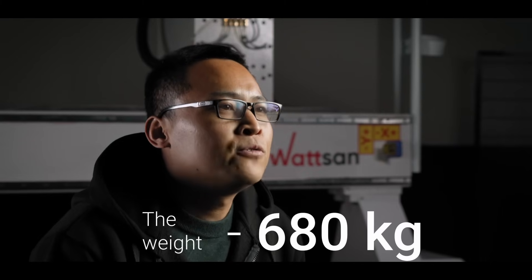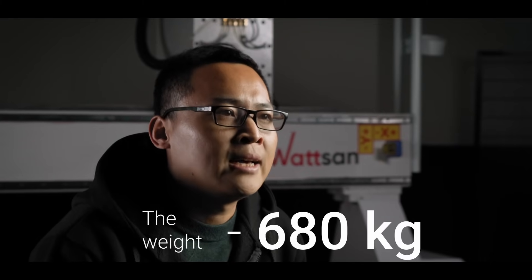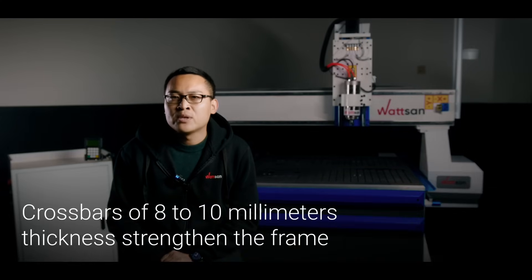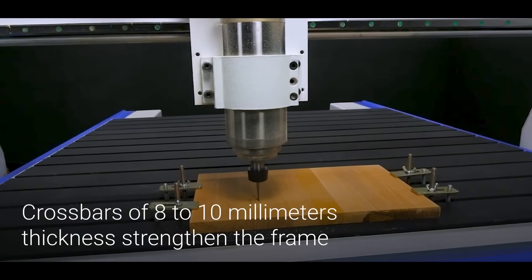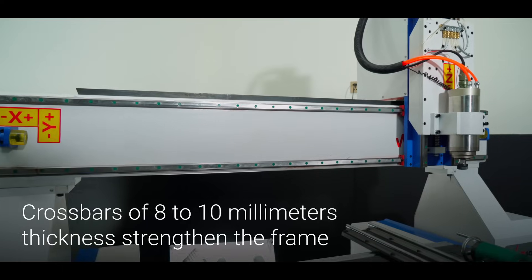Now let's go into the details. The miller itself weighs 680kg. Additionally, center crossbars bolster the 8 to 10mm thick welded steel profile frame.